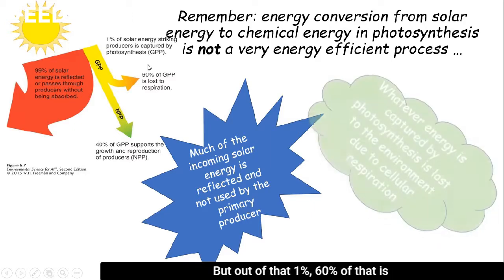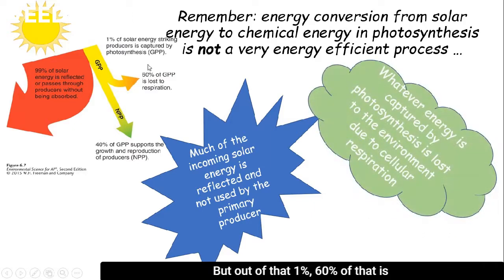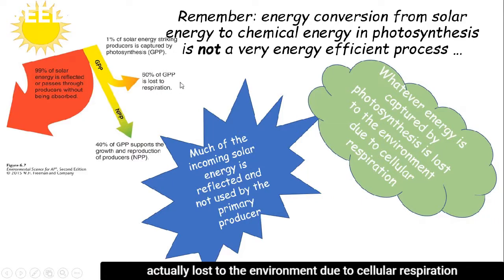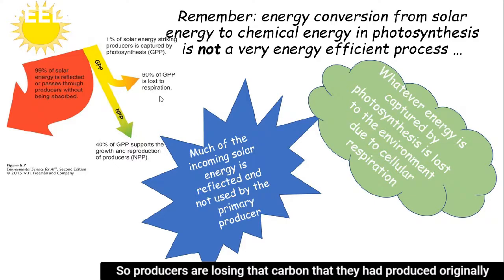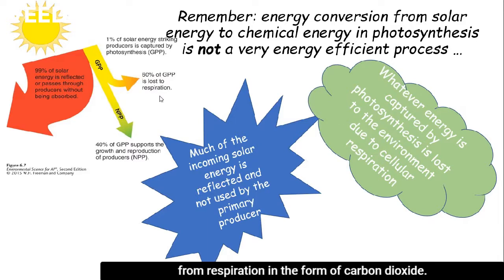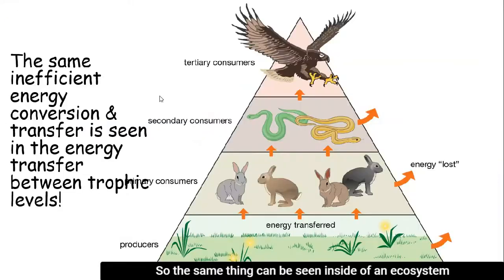But remember, out of that 1%, a good chunk — about 60% — is actually lost to the environment due to cellular respiration. So plants are losing carbon they had produced due to cellular respiration in the form of carbon dioxide.